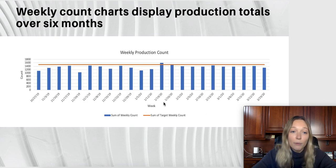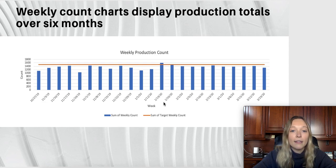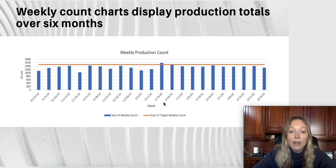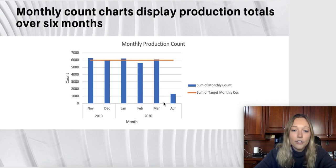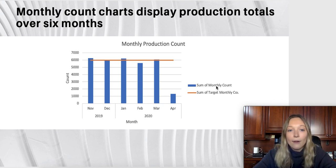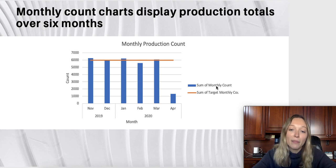A firm would also be able to use this information to get weekly count charts. This graph shows over a six-month period what the weekly count totals were. All these graphs compare against a target count set by the company. Similarly, there is a monthly view showing counts over six months, with the same data now grouped by month.